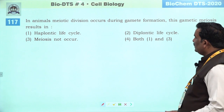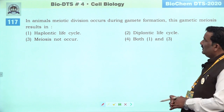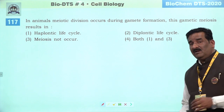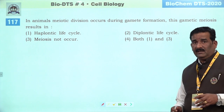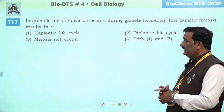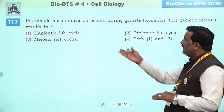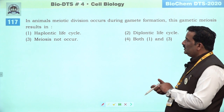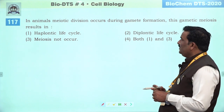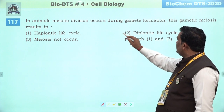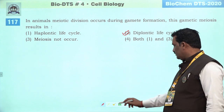Next question: in animals, meiotic divisions occur during gamete formation — this gametic meiosis results in. Plant ki body bhi diploid hoti hai, higher animals ki bhi aisi hoti hai — yeh kuch na kuch diplontic life cycle se manage kar rahi hai. Diplontic life cycle humare paas better option hai. Haplontic — jiनकी body haploid hoti hai, khaas taur se algae mein majority mein dekha jaata hai. Humara jo right answer banta hai woh second hai.